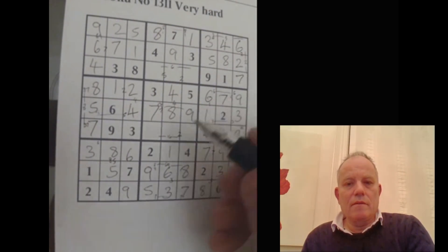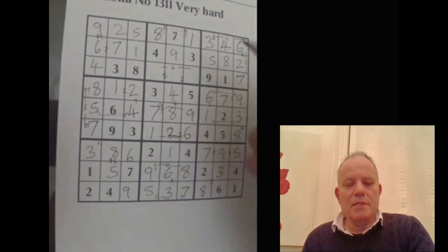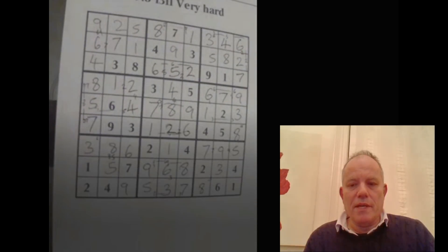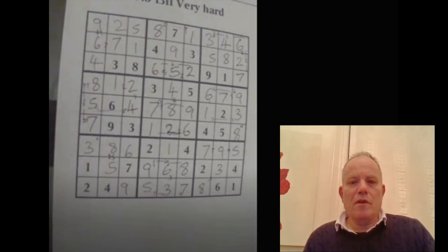And certainly, a lot of the speed that I achieve is done by just scanning the grid very quickly at this point. So there we go. That's the puzzle completed just under five minutes, about four minutes, 43 for the solve.